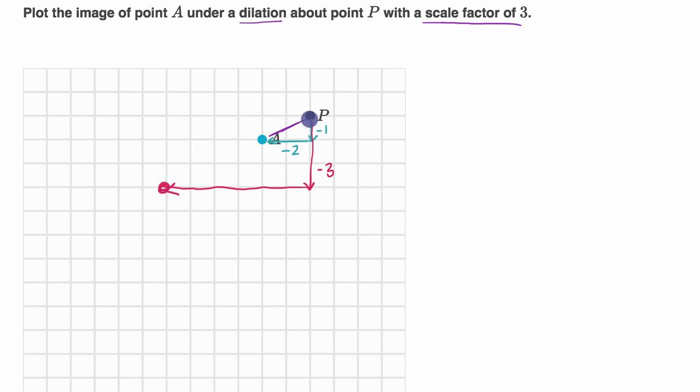And you can even see that this is indeed three times as far from P in the same direction. And so we could call the image of point A, maybe we call that A prime, and so there you have it. It has been dilated with a scale factor of three.